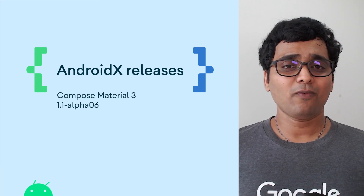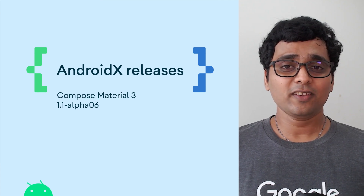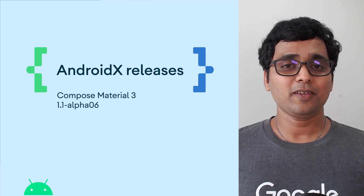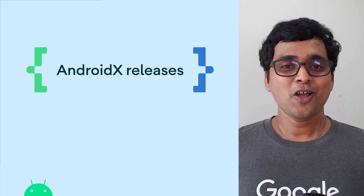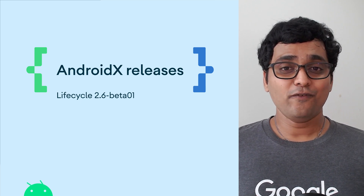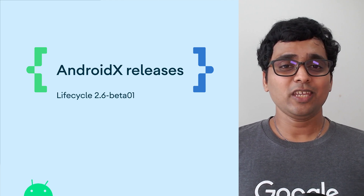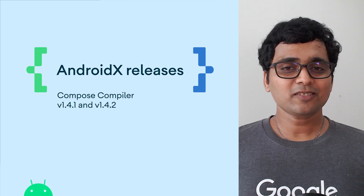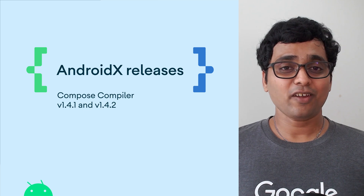Compose Material 3 1.1 Alpha 6 added new features and API changes, including support for prefix and suffix text in text fields, a time picker function for Material 3 compliant time pickers, and modal bottom sheet implementation for Material 3. With Lifecycle 2.6 Beta 1, the LifecycleOwner and ViewModelStoreOwner are now written in Kotlin, which also introduces source-incompatible changes for classes written in Kotlin. Lastly, Compose Compiler 1.4.1 and 1.4.2 focus on fixing recomposition bugs.